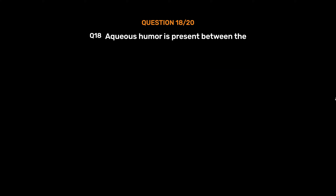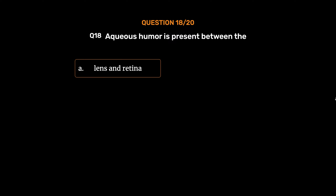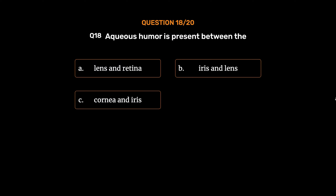Question number 18. Aqueous humor is present between the: Option A: Lens and retina. Option B: Iris and lens. Option C: Cornea and iris. Option D: Cornea and lens. The correct answer is Option D: Cornea and lens.